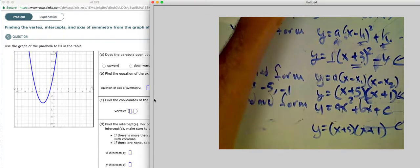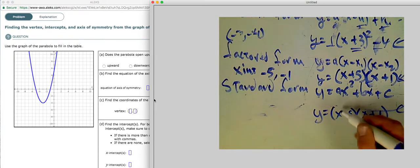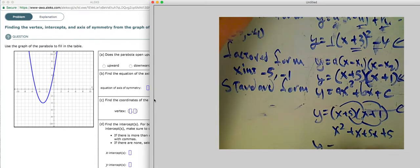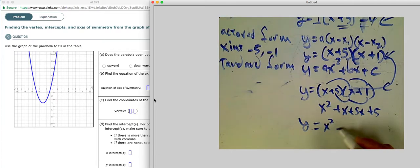And so if I expand this out, I'm going to get x squared plus x plus 5x plus 5, or y equals x squared plus 6x plus 5. So this would be in standard form.